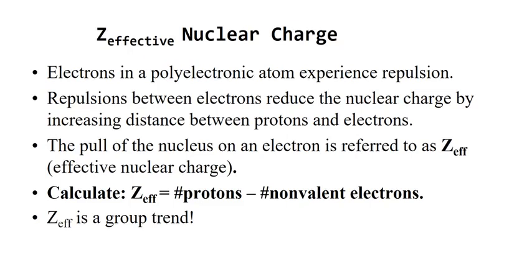Electrons in a polyelectronic atom experience repulsion — they repel each other. Repulsions between electrons reduce the nuclear charge by increasing distance between protons and electrons. The pull of the nucleus on an electron is referred to as Z-effective nuclear charge. To calculate a numeric value for this: it is the number of protons minus the number of non-valence electrons — how many protons are in the nucleus minus the number of core electrons. Importantly, Z-effective nuclear charge is a group trend.